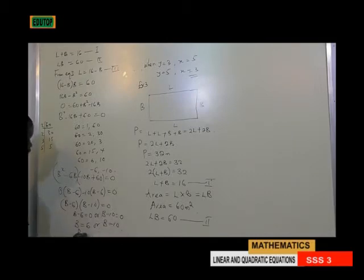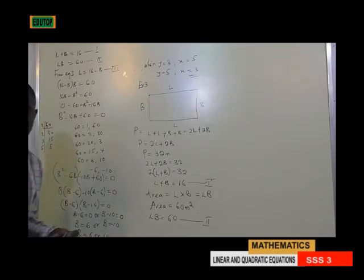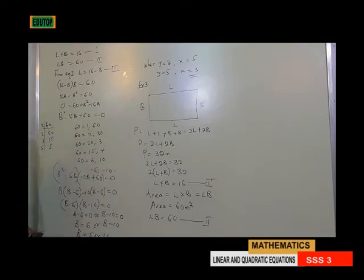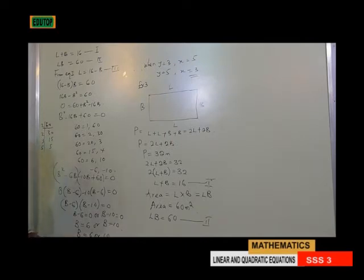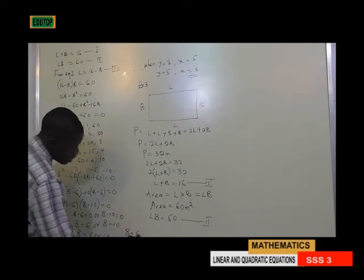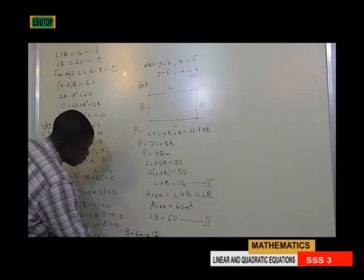We can write that b equals 6 or 10. We have two values for our breadth. The question asks us to find the breadth, so there is no need to find the length. Since the unit is meters, the breadth would be 6 meters or 10 meters.